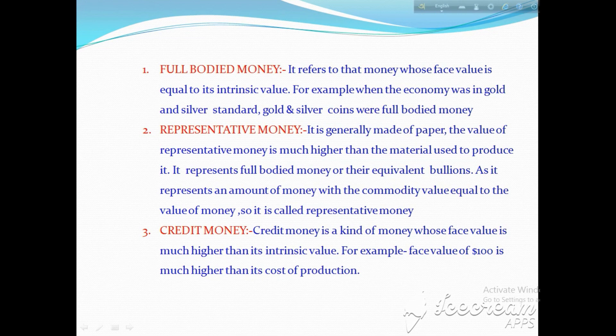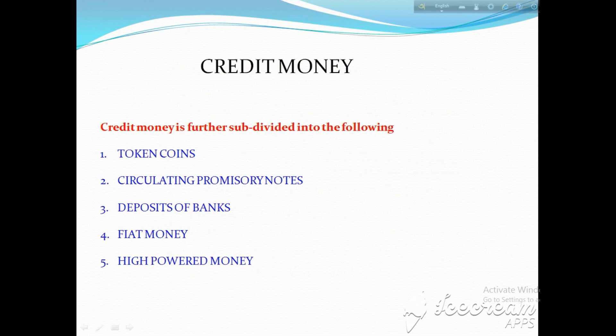In this slide, we can see that credit money is subdivided into the following: token coins, circulating promissory notes, deposits of bank, fiat money, and high-powered money. These are the subdivisions of credit money.